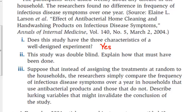Let's look at the third question that asked about the lurking variables. It says instead of assigning the treatments at random, they simply compare the frequency of infectious disease symptoms over a year in households that use antibacterial products and those that do not. What are some lurking variables that we run into there?